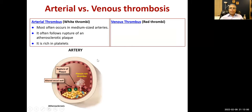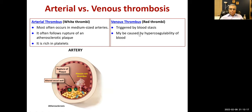The fibrous cap of the atherosclerotic plaque has ruptured and platelets have aggregated there. Venous thrombosis is triggered by blood stasis — the cause of deep vein thrombosis — and may be caused by hypercoagulability of the blood or damage to the blood vessel. Virchow's triad states three basic causes of venous thrombosis: stasis, hypercoagulability, and injury to the vessel wall.